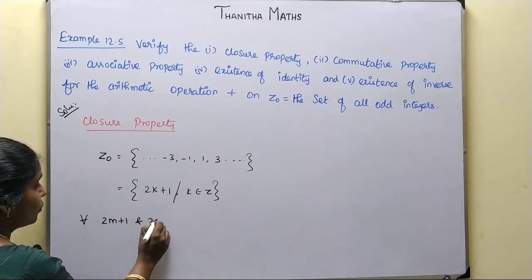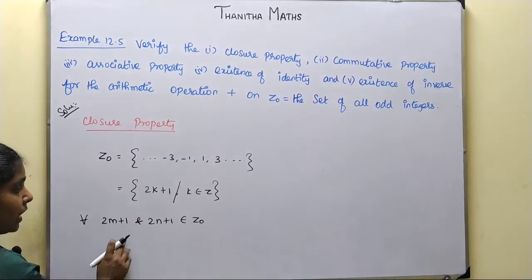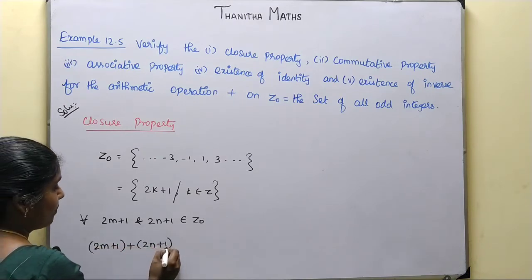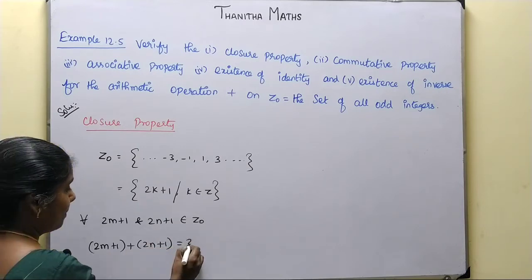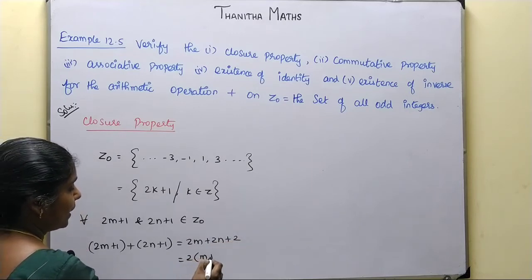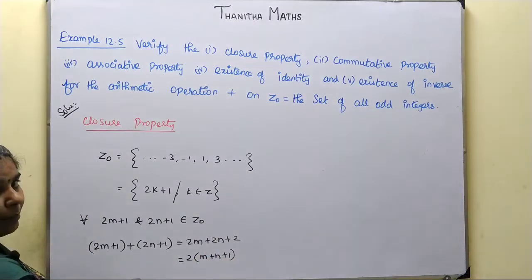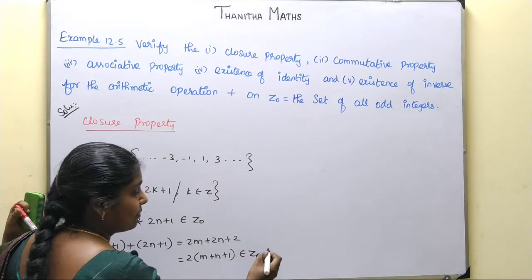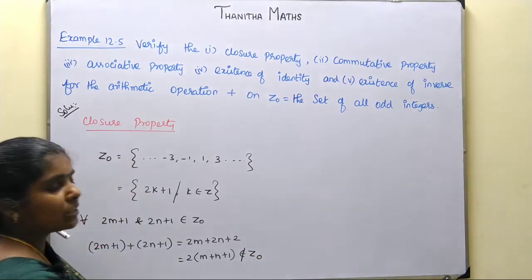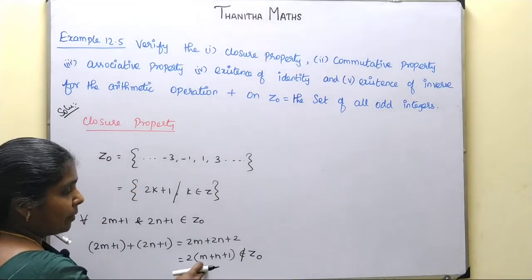Let 2m plus 1 and 2n plus 1 both belong to ZO. Then their sum is: (2m + 1) + (2n + 1) = 2m + 2n + 2. This result does not belong to ZO, since it is an even number.